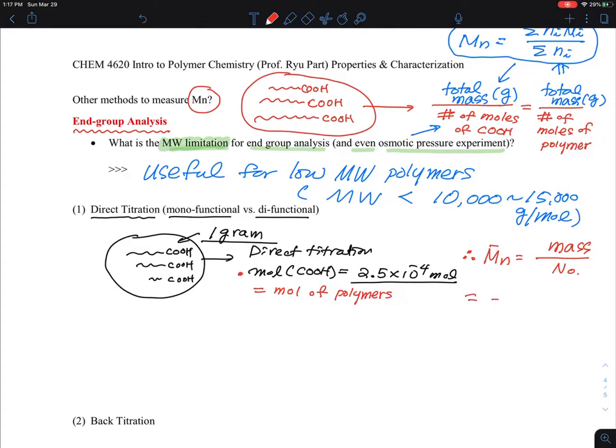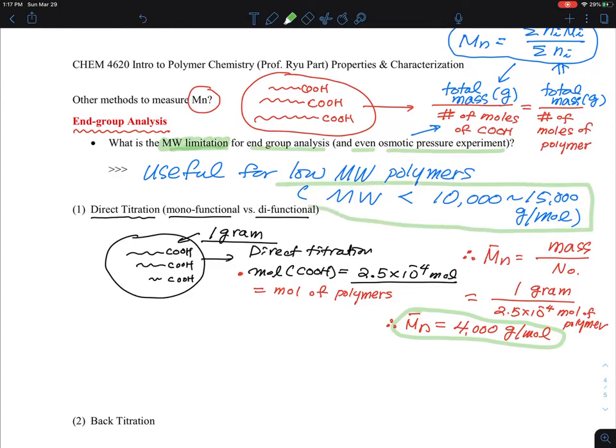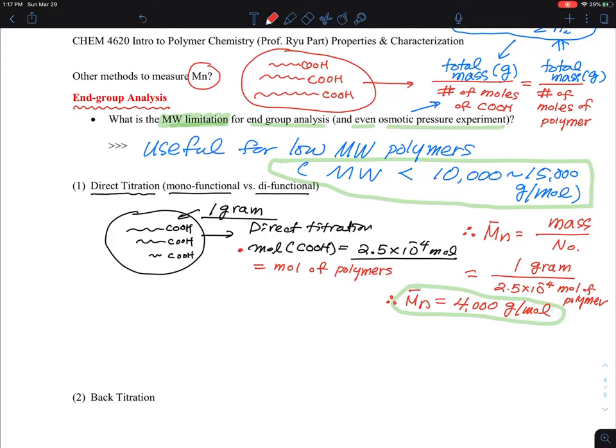I can simply think about the number average molecular weight concept, which is mass divided by total numbers. What's my total mass? 1 gram. What's my total number? That is 2.5 times 10 to the minus 4 moles of polymers. So if you calculate that, the number average molecular weight here is 4,000 gram per mol. So once you finish this, you need to actually look, is this molecular weight small enough that my titration gives a reasonable result? 4,000 gram per mol is pretty reasonable, and the end-group analysis would work.